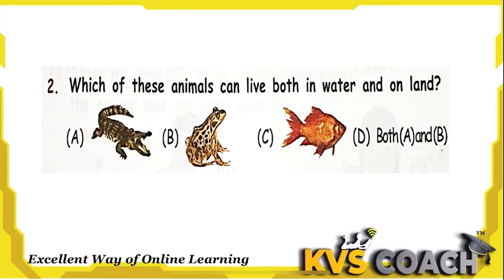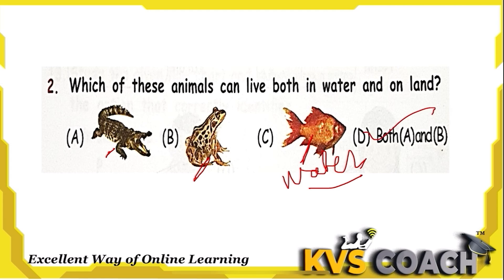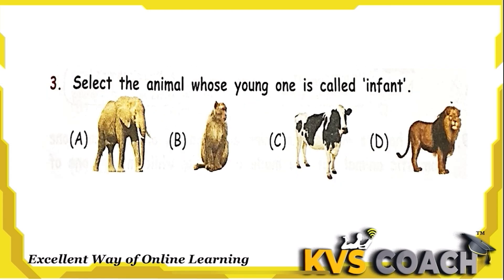Question 2: Which of these animals can live both in water and on land? Crocodile lives in both, and frog lives in both land and water. Fish can only live in water. So both A (crocodile) and B (frog) are the correct answers.